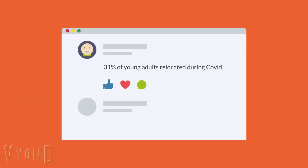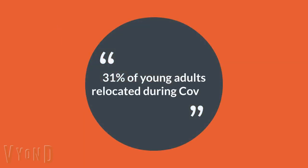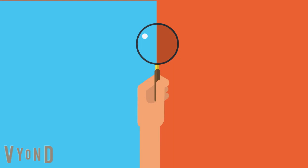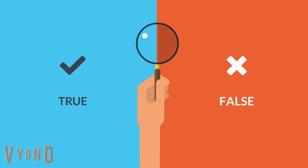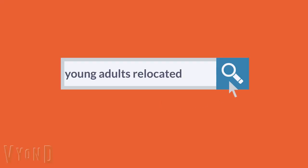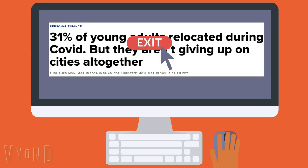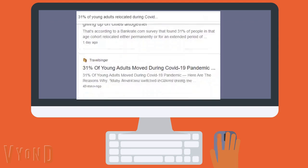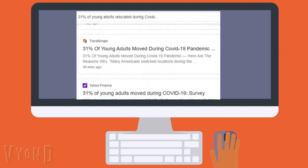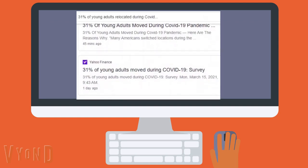Sometimes you don't care about the particular article that reaches you — you care about the claim the article is making. You want to know if it is true or false. Finding trusted coverage will help you better evaluate it. In this case, you may ignore the source that reached you and scan multiple sources to find the best source you can.